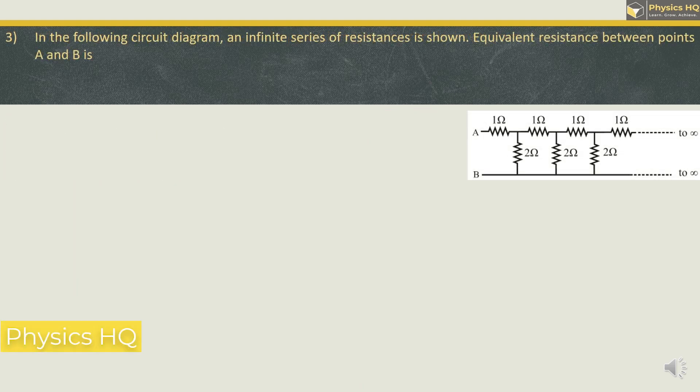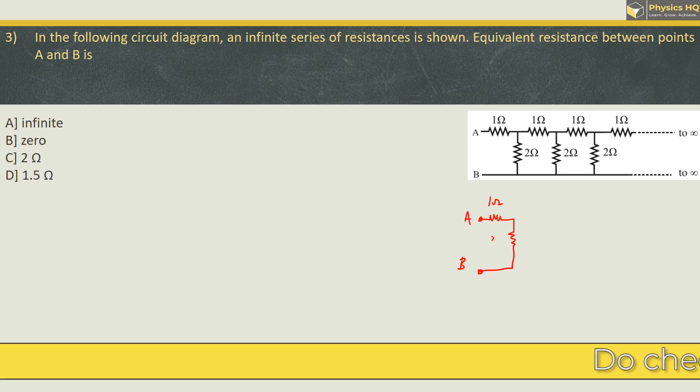Let us check out the next MCQ. In the following circuit diagram, an infinite series of resistances is shown. Equivalent resistance between points A and B is infinite, 0, 2 or 1.5 Ohm. What we can do is we can redraw this in this fashion where you have terminal A and B. This is 1 Ohm, this is 2 Ohm.